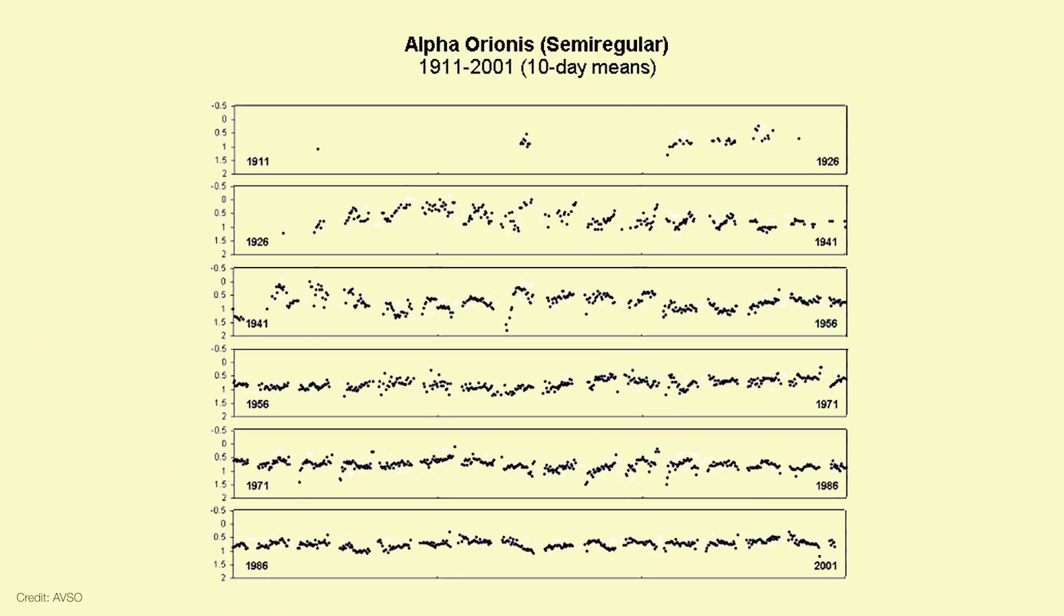In Betelgeuse's case, there's at least three pulsation cycles going on. There's a dominant period of 420 days, but that's plus or minus 15 days. Then there's a longer term period that ranges anywhere from five to six years. And then there's even a shorter term period ranging from 100 to 180 days. And by the way, those are just the pulsation periods that we already know about. We're still trying to figure out what causes all these different pulsations in red supergiants.